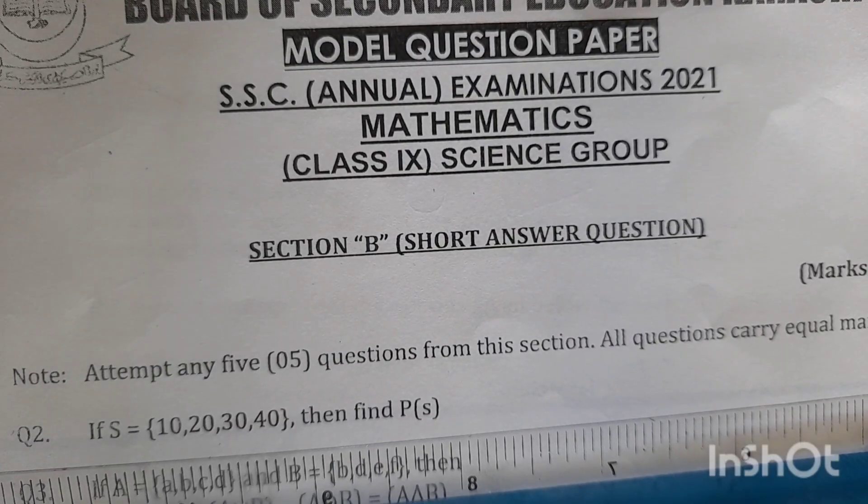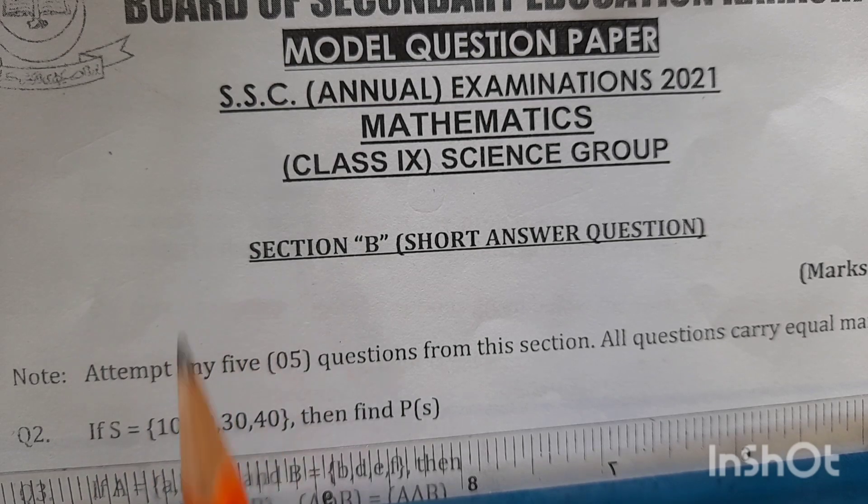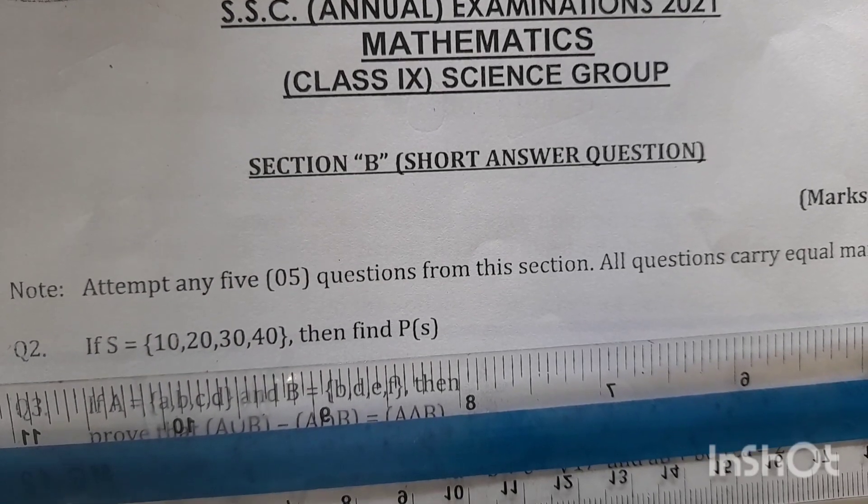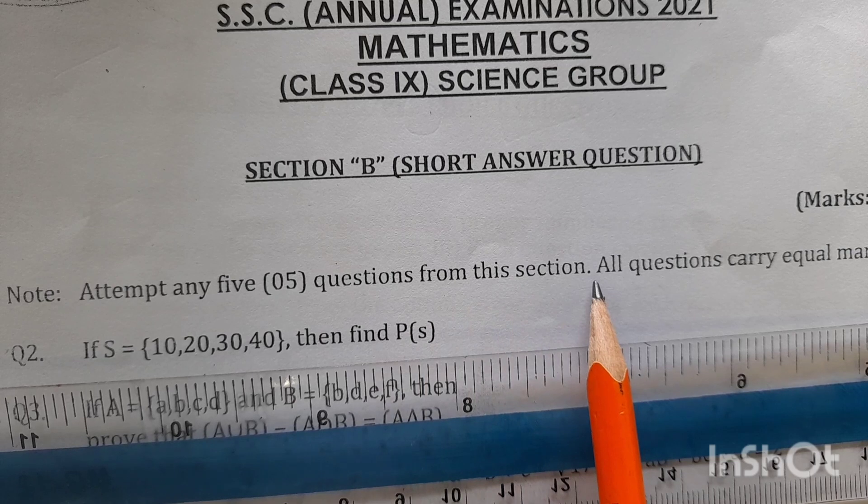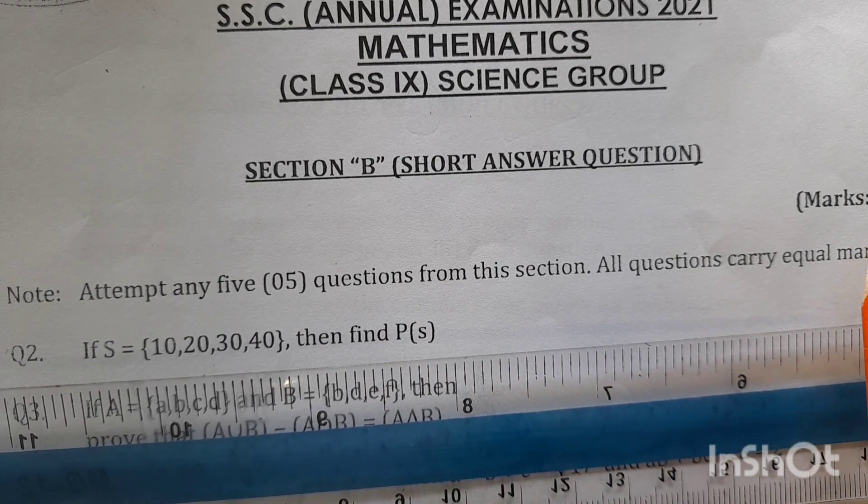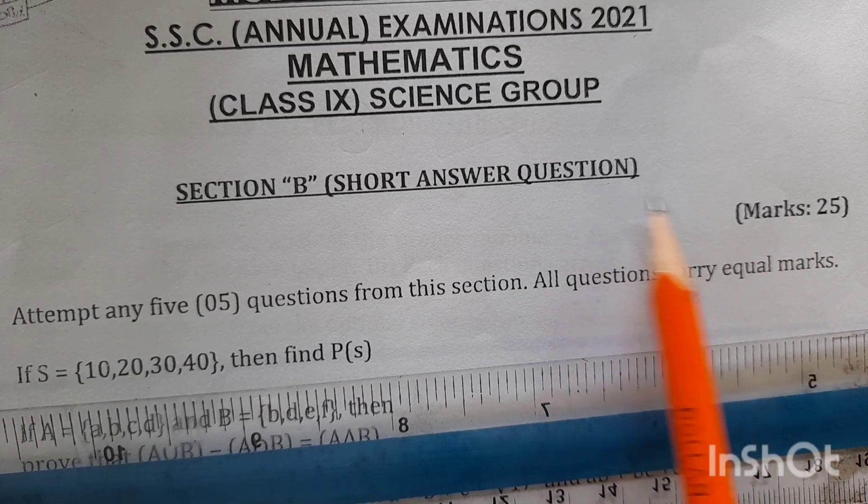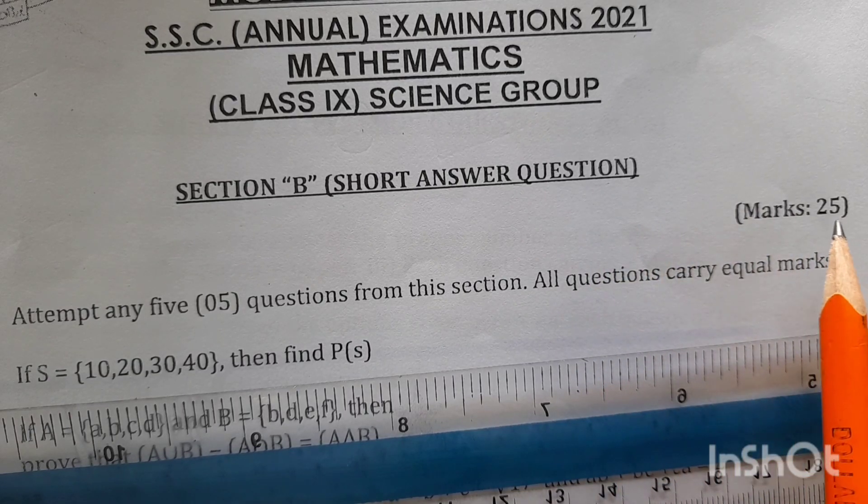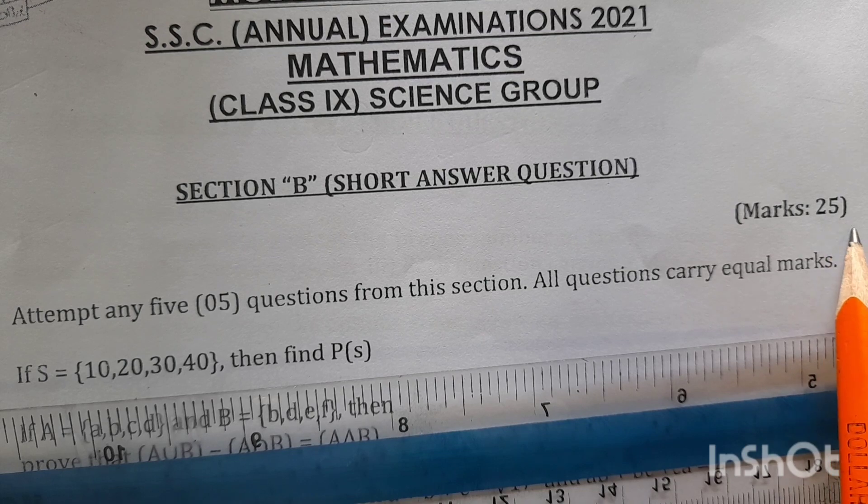Section B contains 9 questions. You have to attempt any 5 questions from this section and all the questions carry equal marks. It means 25 marks are there. Section B contains 25 marks and every question you have is 5 marks.